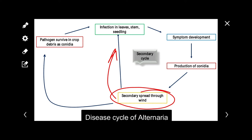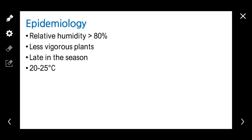Coming to epidemiology: the disease requires more than 80% relative humidity, less vigorous plants, and a temperature of 20 to 25 degrees centigrade.